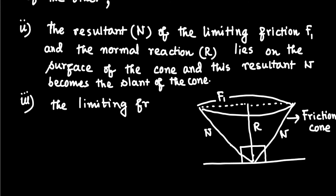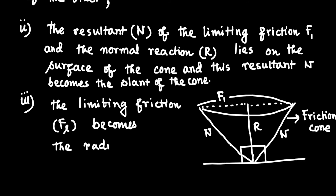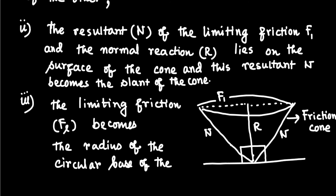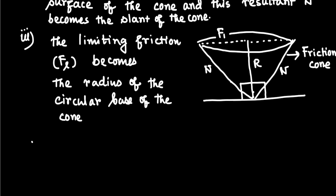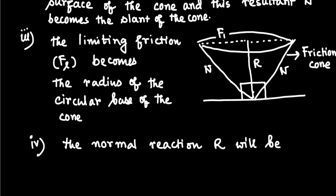Characteristic number three: the limiting friction FL becomes the radius of the circular cross-section — that is, the circular base of the cone. Characteristic number four: the normal reaction R on the body, applied by the rough surface and acting in the vertically upward direction, is the height of the friction cone.